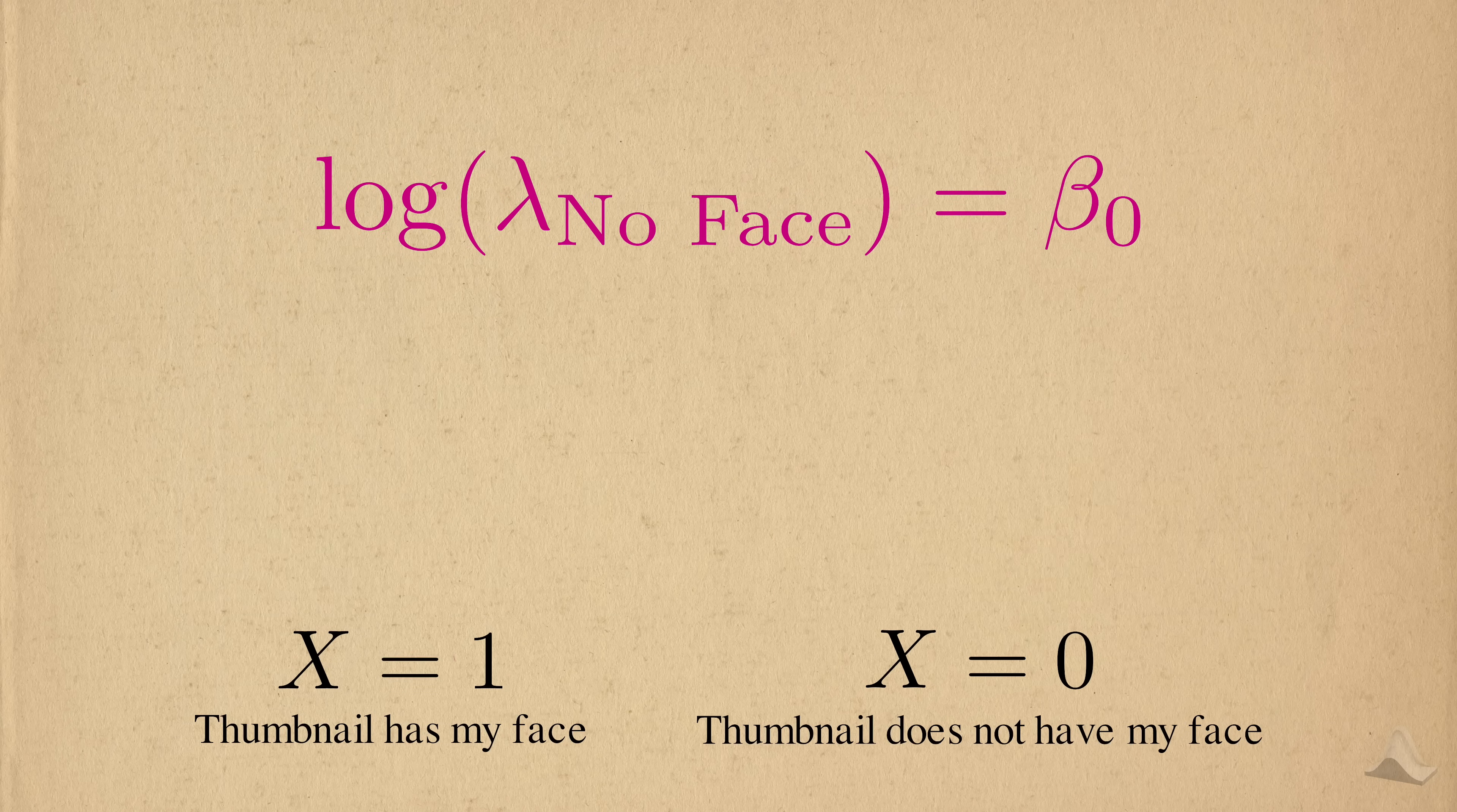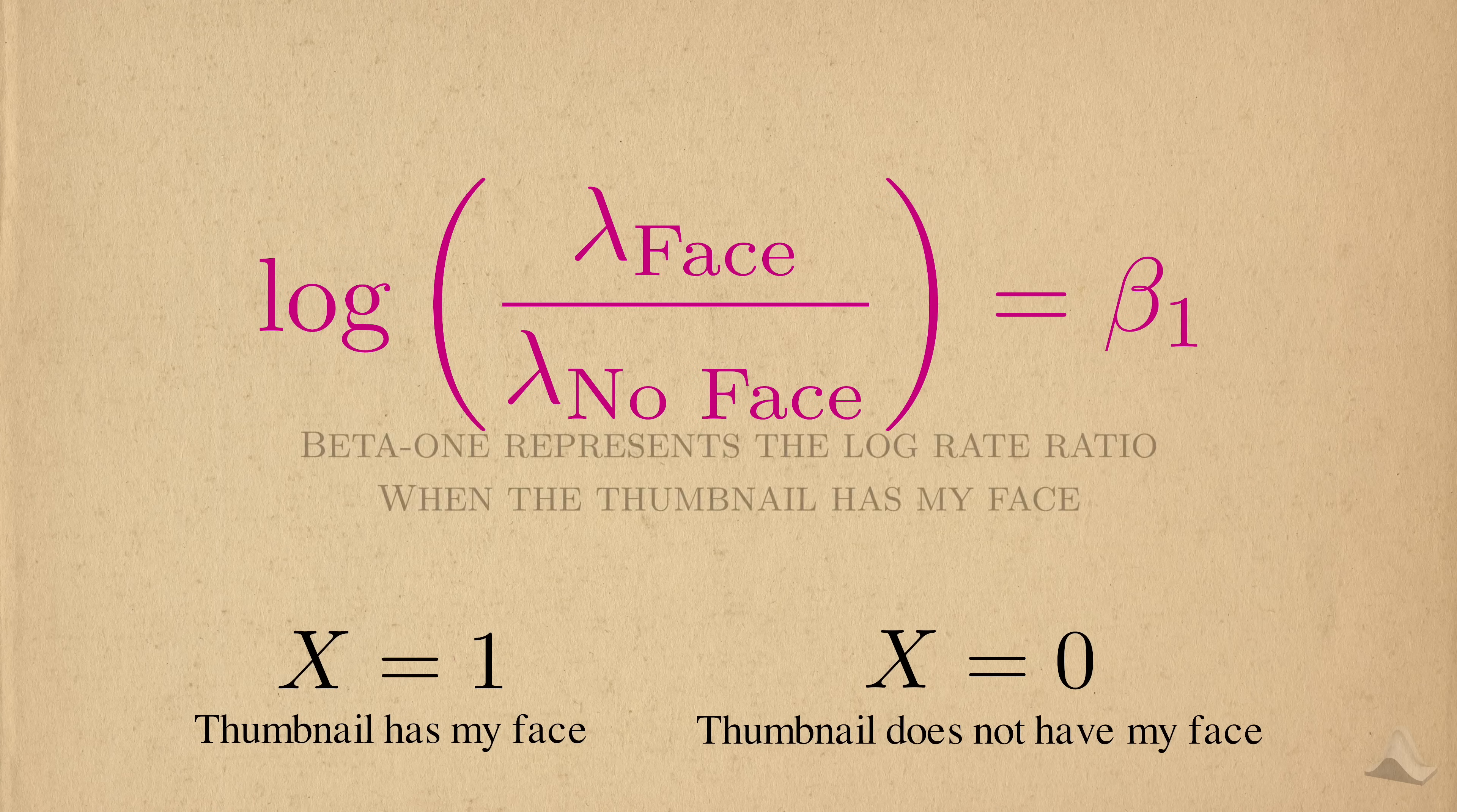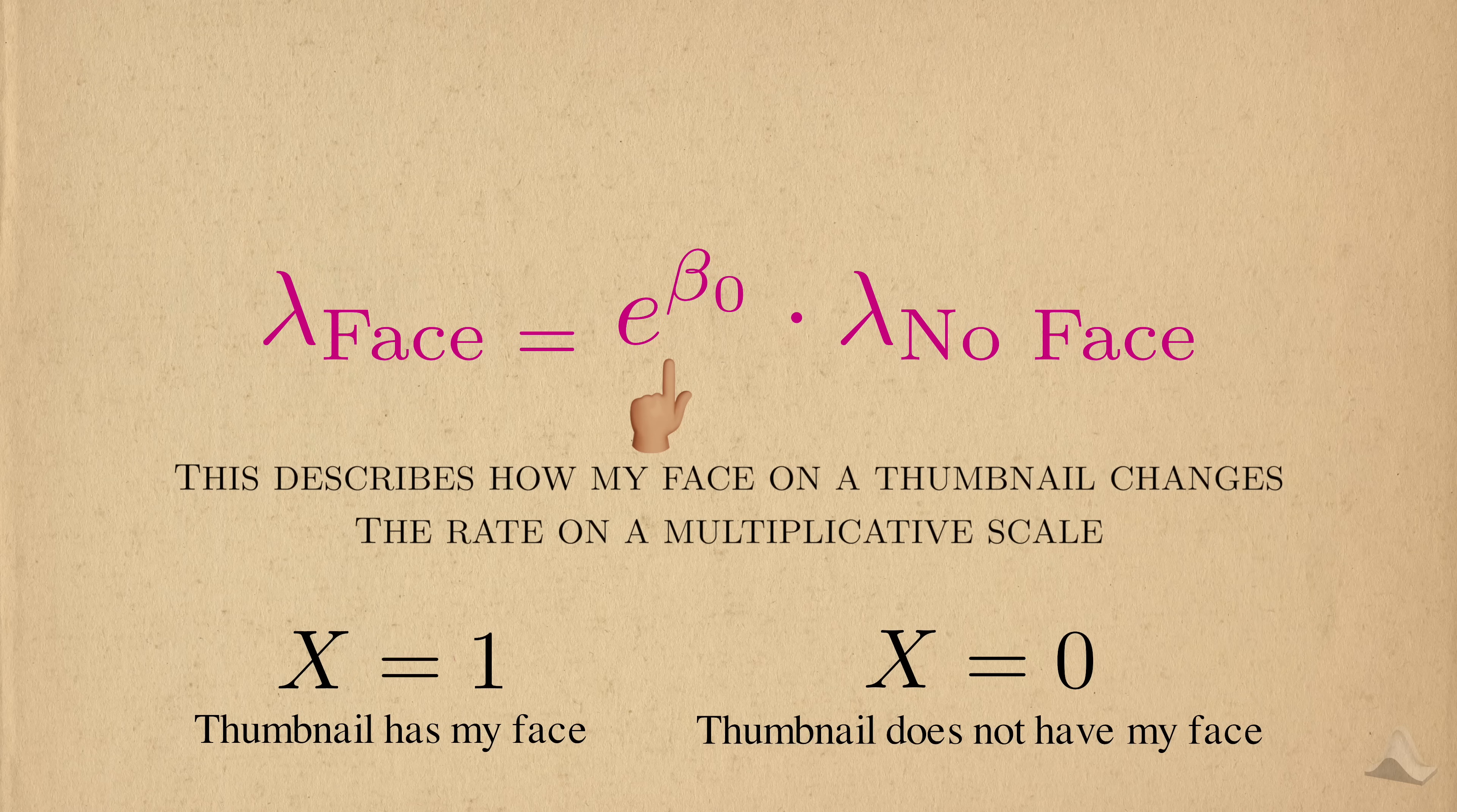When my face isn't on the thumbnail, we only have beta 0 in the linear predictor. So beta 0 is the log rate of YouTube comments on a video with a thumbnail that doesn't have my face on it. To isolate beta 1, we need to do some mathematical manipulation similar to what we did in the linear and logistic regression videos. I'm not going to bore you with the math. What you'll get in the end is that beta 1 represents the log rate ratio. With some manipulation, we can get this expression.